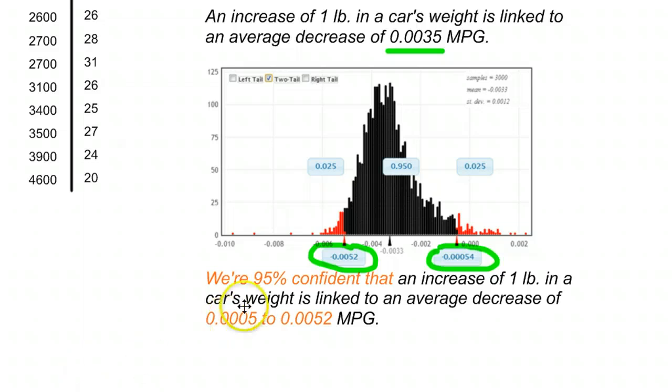So one last time through that confidence interval. We're 95% confident that an average increase of one pound in the car's weight, the car's weight goes up one pound, is linked to an average decrease of 0.0005 to 0.0052 miles per gallon. There's going to be a drop in miles per gallon somewhere between these values we predict based on a one pound increase of a car's weight.